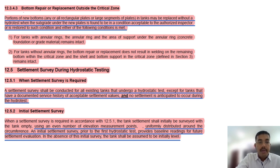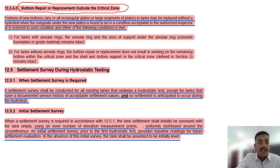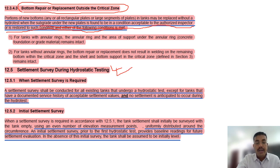For alternation or repair of floating roofs, a hydrostatic test is not required unless there is a major alteration or major repair. Bottom repair or replacement outside the critical zone is acceptable; however, inside the critical zone, care must be taken. A portion of new bottoms may be replaced without a hydrostatic test when the subgrade is found to be in acceptable condition.